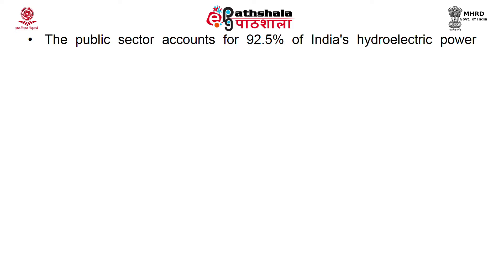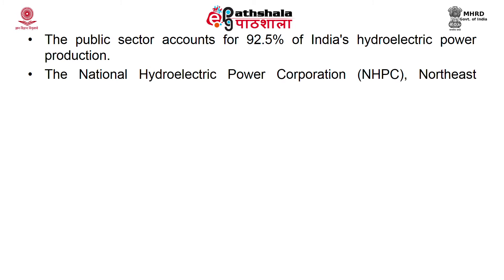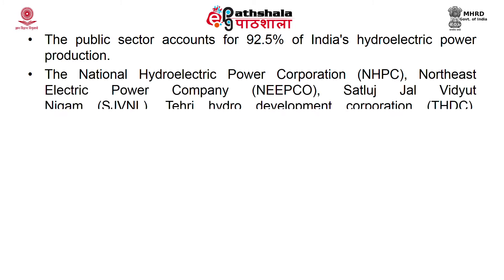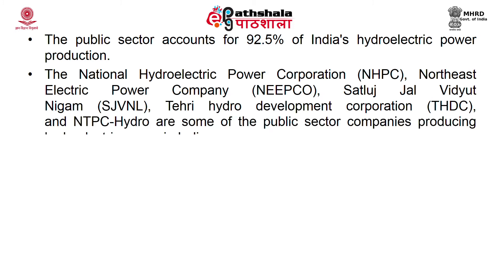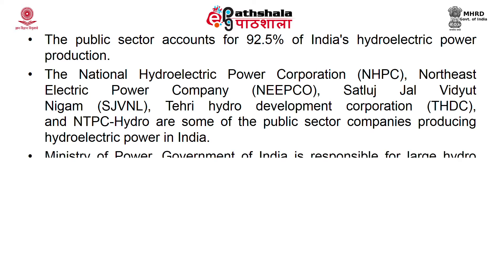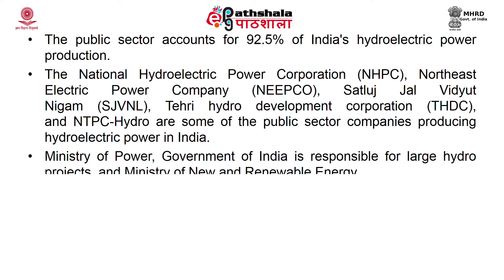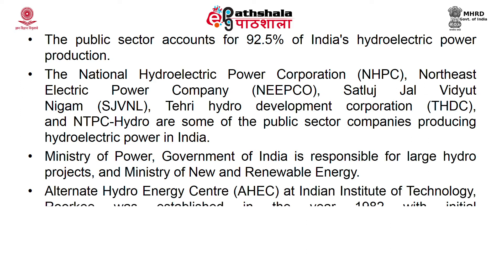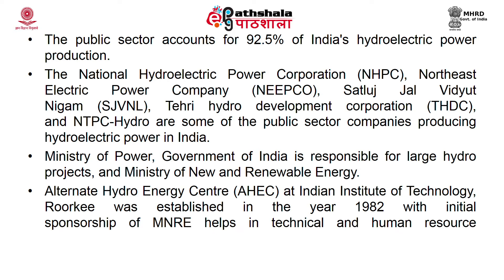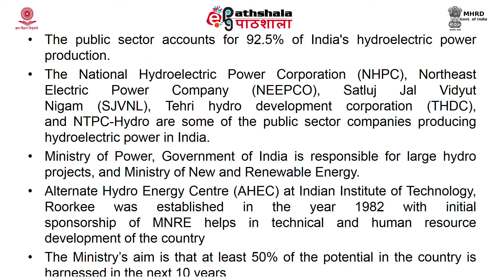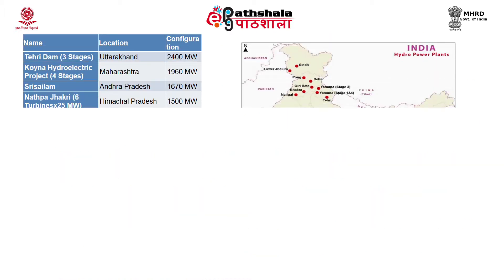The public sector accounts for 92.5% of India's hydroelectric power production. Key public sector companies include NHPC (National Hydroelectric Power Corporation), NEEPCO (Northern Electric Power Company), THDC (Tehri Hydro Development Corporation), NTPC Hydro, and others. The Ministry of Power oversees large hydropower projects, while the Ministry of New and Renewable Energy handles small hydro. The Alternate Hydro Energy Centre at IIT Roorkee was established in 1982 with MNRE sponsorship, and the ministry aims to harness at least 50% of the country's hydropower potential within the next 10 years.